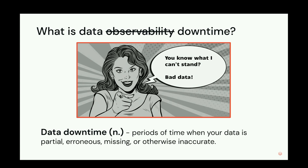To give a sense of what data downtime can cause — a couple of pretty public cases. One is Netflix being down in 2016 for 45 minutes, which was due to duplicate data in their pipelines. Another well-known case was Unity having bad data lead to $100 million in misspending on ads. The repercussions of bad data can be very serious — it could be reports shared with the CFO or even public earning calls.